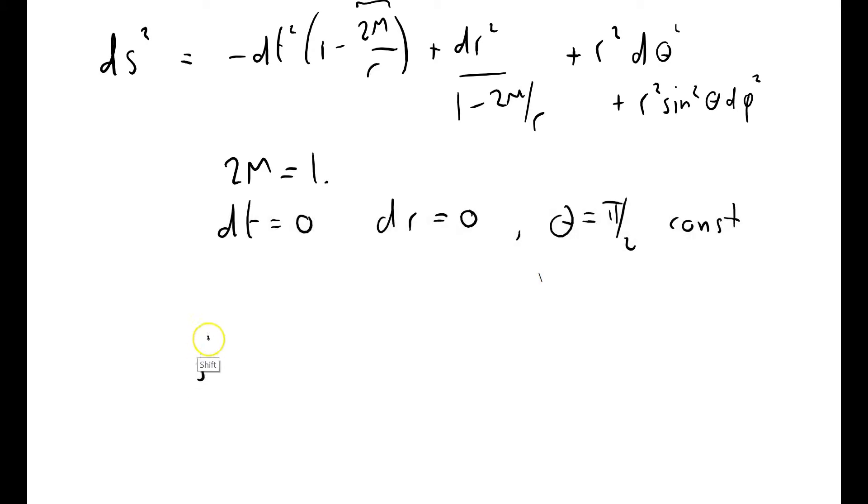So that leaves me with ds squared equals r squared d phi squared.